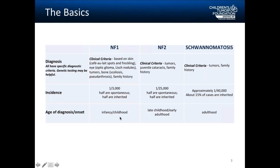The incidence of each condition is pretty different. In NF1, we see 1 in 3,000 live births, and half of these are what we call spontaneous, meaning there is no family history. The other half are inherited from a first-degree relative, meaning a parent. In NF2, we see about 1 in 25,000 — half spontaneous, half inherited, similar to NF1. In schwannomatosis, we estimate approximately 1 in 40,000 live births are affected, and about 15% of these cases are inherited.